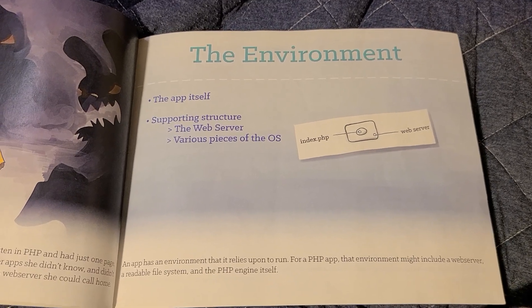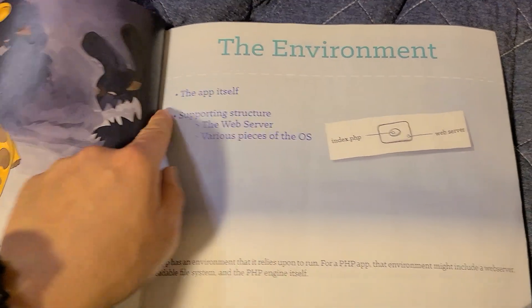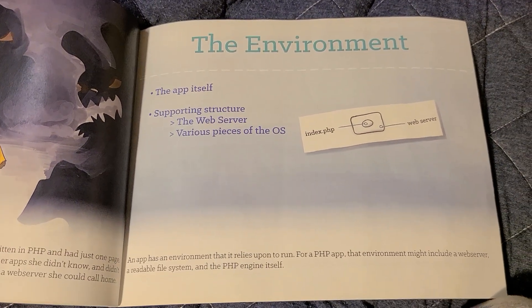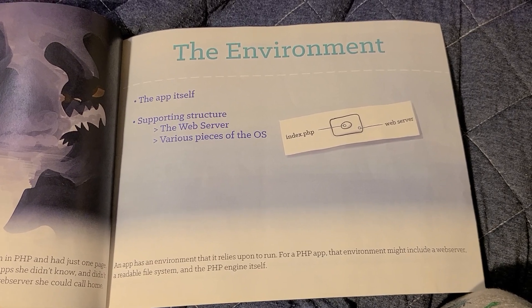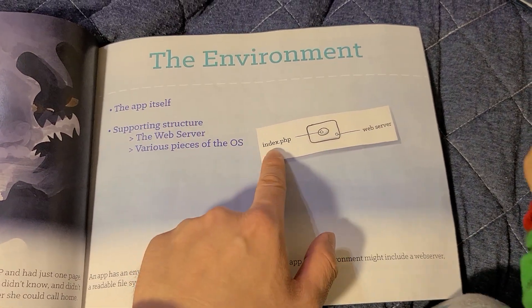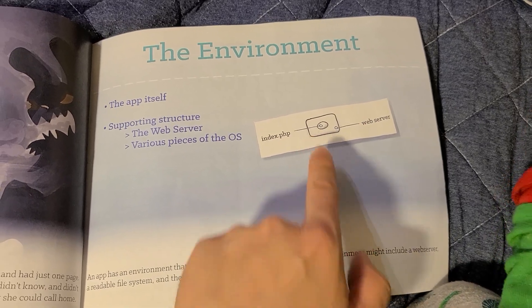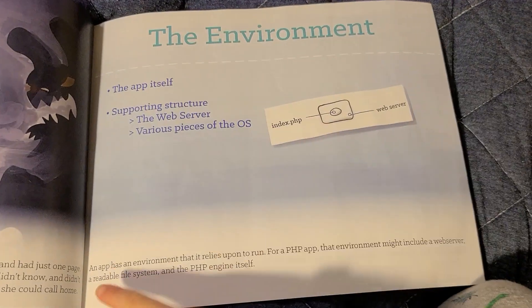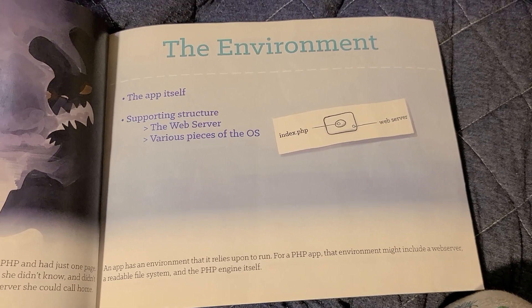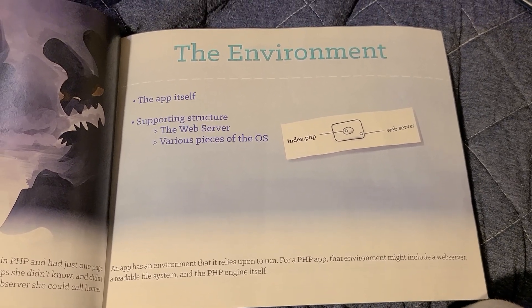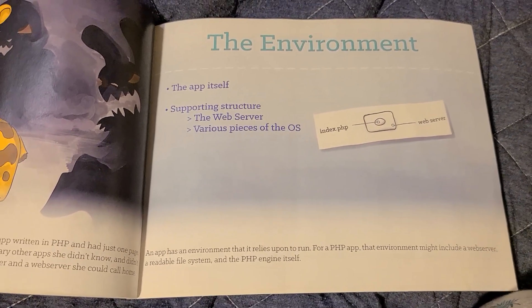The environment includes the app itself, supporting structure, the web server, various pieces of the OS, and the app's index and PHP files. An app has an environment that it relies upon to run. For a PHP app, that environment might include a web server, a readable file system, and the PHP engine itself.